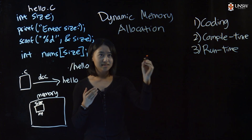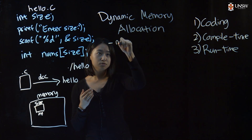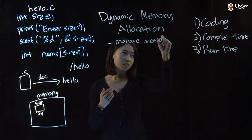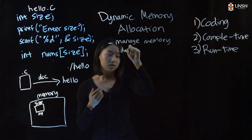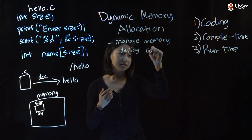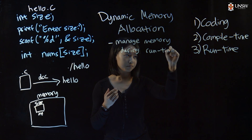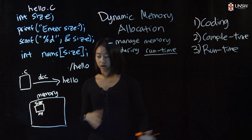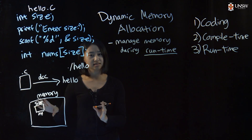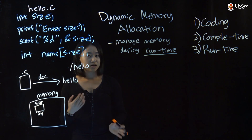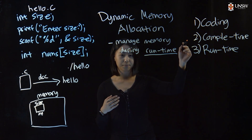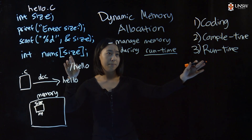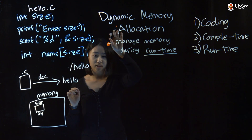What dynamic memory allocation does is it allows you to manage memory during runtime — and that's the important part. Usually with our compiler like DCC, it sets out all the memory that you need, but that's during compile time. It cannot account for things that will only be initialized during runtime. That's when you need dynamic memory allocation.